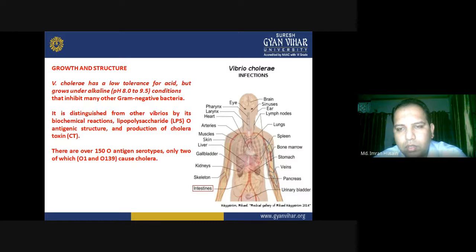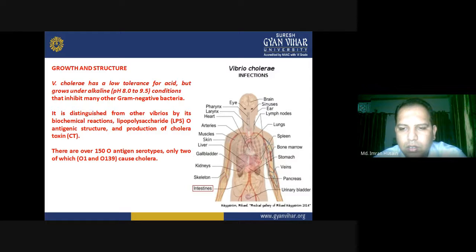Vibrio cholerae infection can affect the brain, sinuses, lymph nodes, lungs, spleen, bone marrow, stomach, veins, pancreas, urinary bladder, intestine, skeleton, kidneys, gallbladder, liver, skin, muscles, arteries, heart, larynx, and pharynx — essentially it can cause infection almost everywhere in the human body.